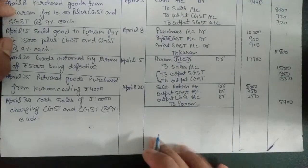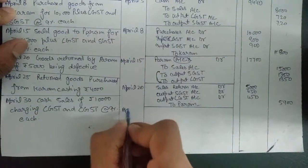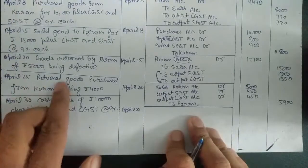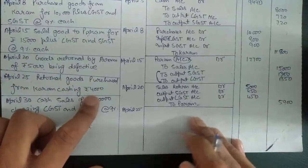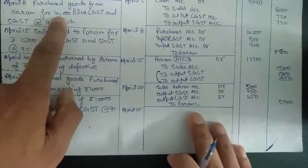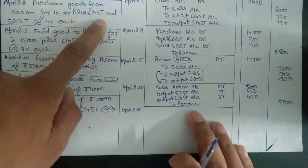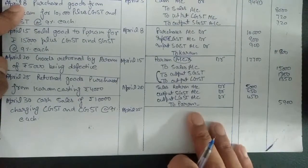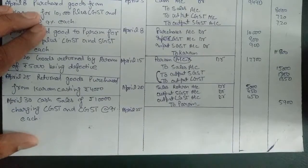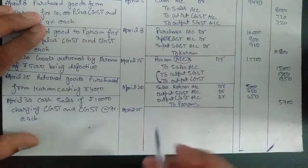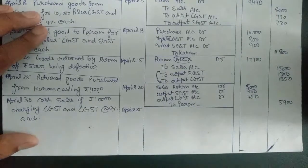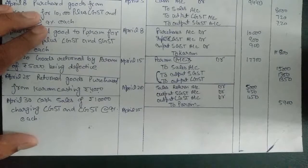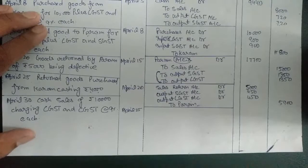The next entry is April 25th: returned goods purchased from Karam costing ₹4,000. Earlier we purchased goods from Karam for ₹10,000 and paid GST at 9% each to Karam — that was a credit transaction. Now we are returning goods to Karam worth ₹4,000. In the sales return entry we studied that we give back GST to the person when we receive our goods back. Similarly, in case of purchase return we also receive GST back from the person whom we purchased goods from earlier.